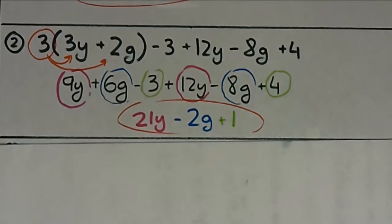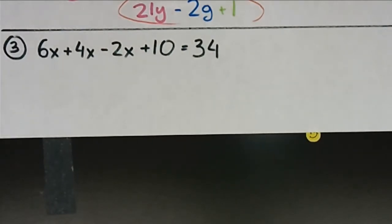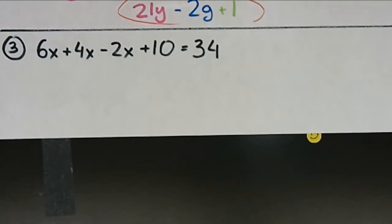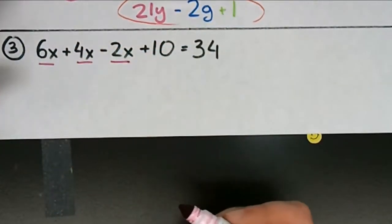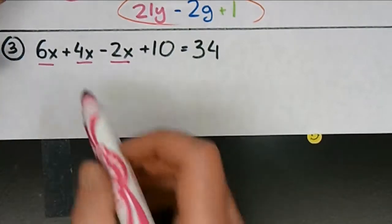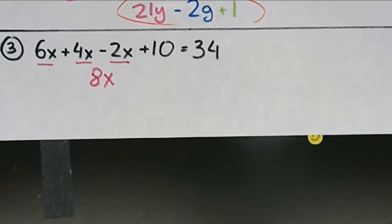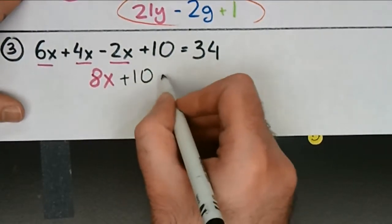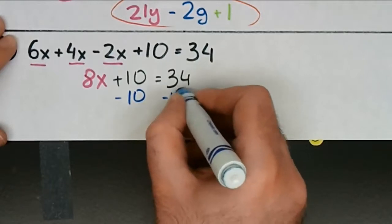Let's go ahead and do number 3. Number 3 is similar to 1 and 2 because you do need to combine something and then solve it just like any other two-step equation. Can someone tell me what should be the first step? If you said combine your x terms, I'd agree — these three x terms are all the same type so you can combine them: 6x plus 4x is 10x, 10x minus 2x is 8x. Then I rewrite the problem. Next step: subtract 10 from both sides — not add.